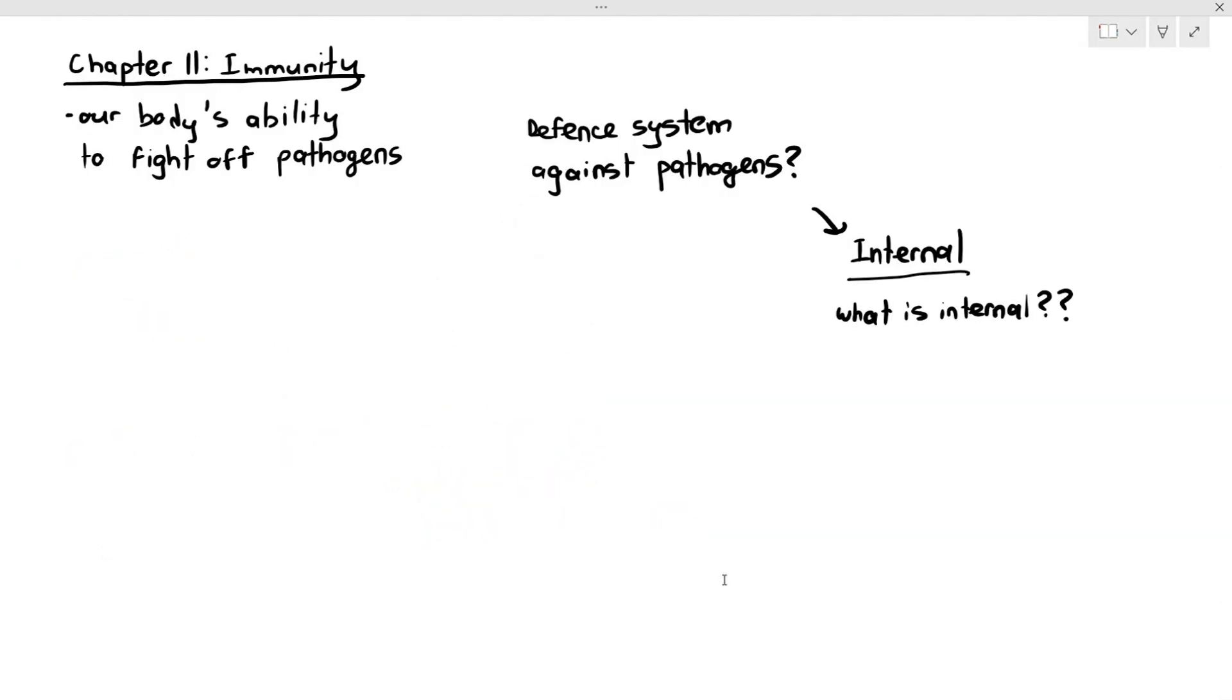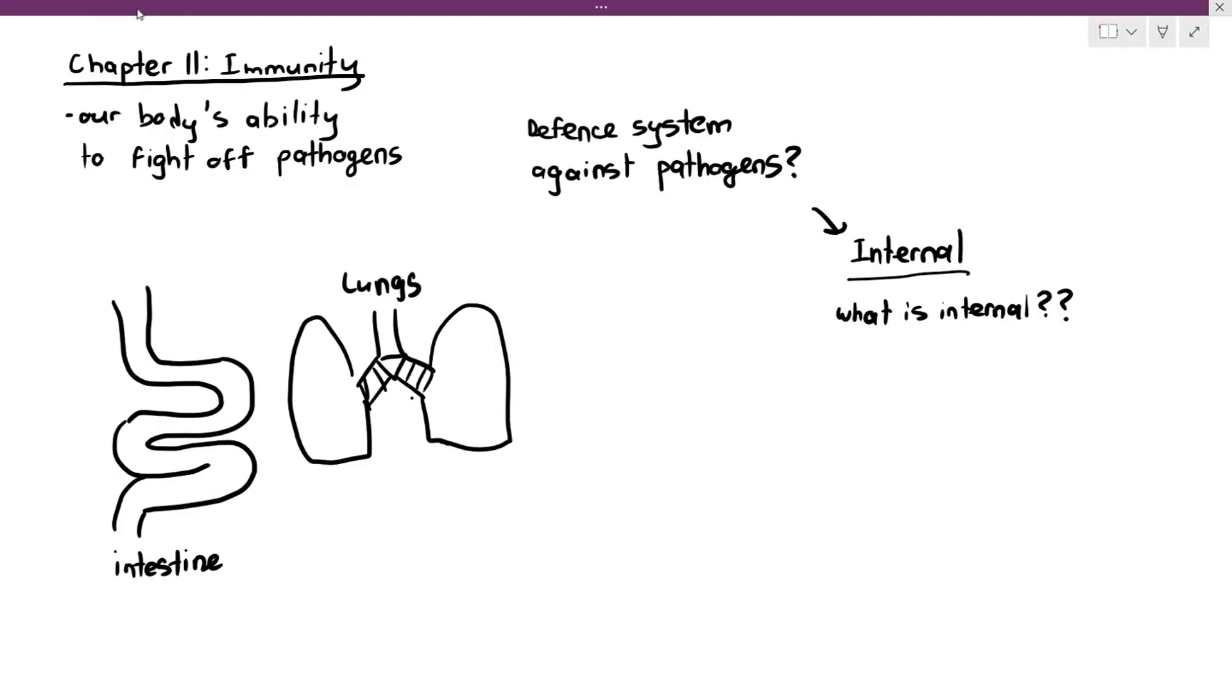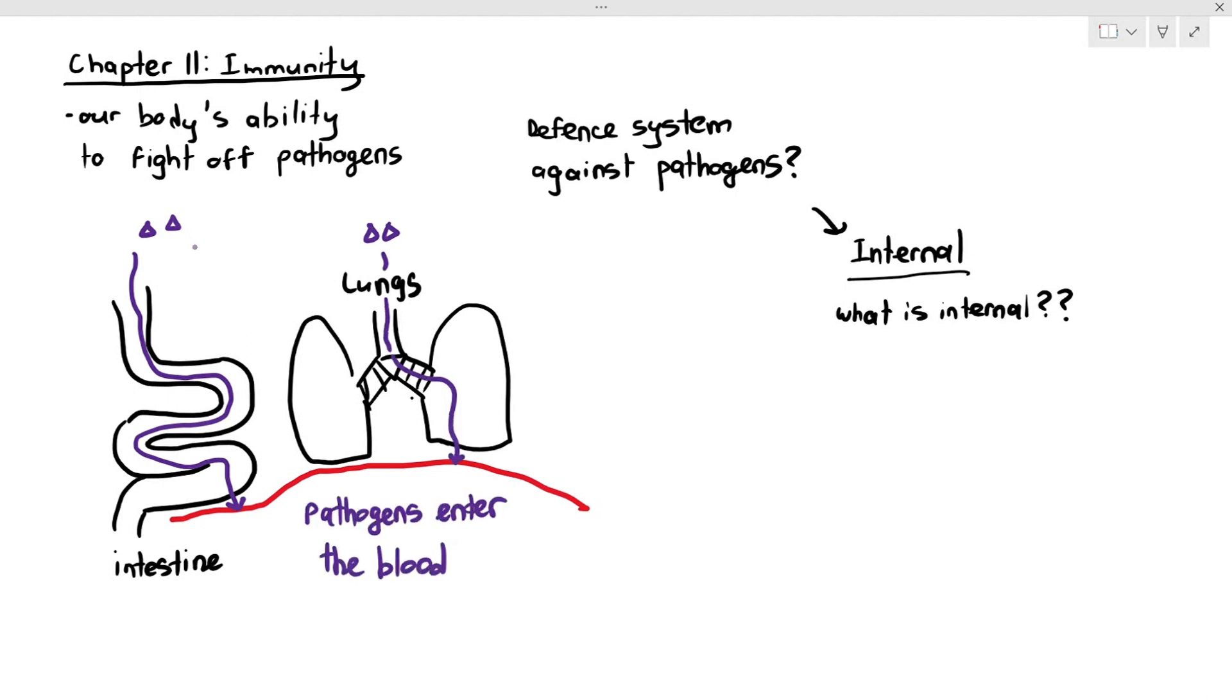we have the internal defense system. Now, what is considered internal, then? Internal is what happens when the pathogens - for example, let's say the pathogens manage to survive the stomach acid, and it goes into your intestine. From the intestine, it enters your blood. Or the pathogens were in the lungs, and then from the lungs, they enter the alveoli, and from the alveoli, they enter the blood. So this is now considered internal. Because when the pathogens are inside your blood vessel, so anytime the pathogen is in your blood vessel, that is internal. And from the blood vessels, they can spread to other parts of the body and diffuse into the other parts of the body. That is called internal.